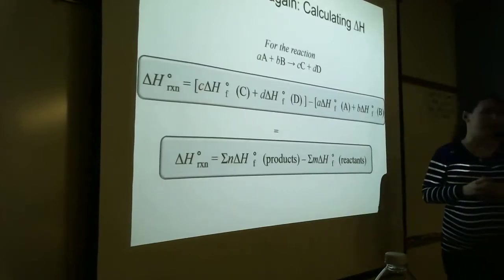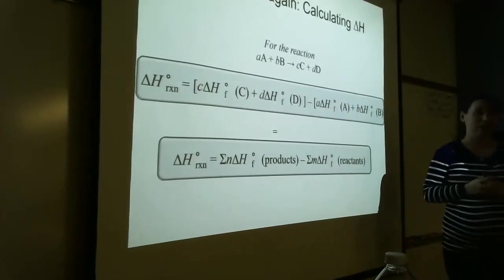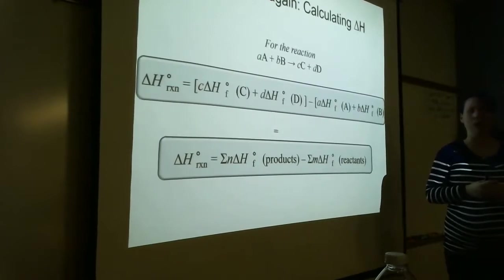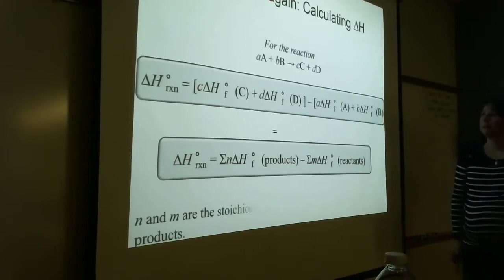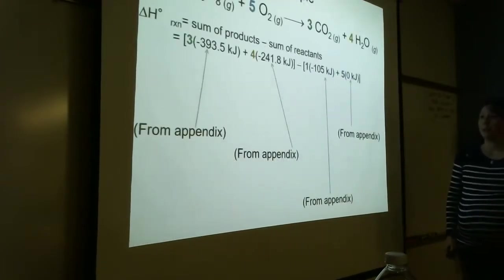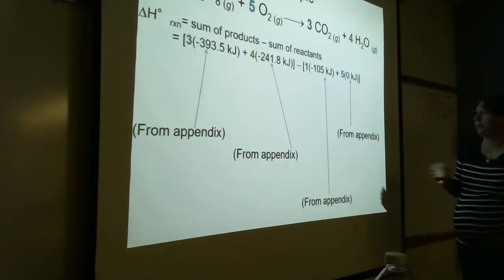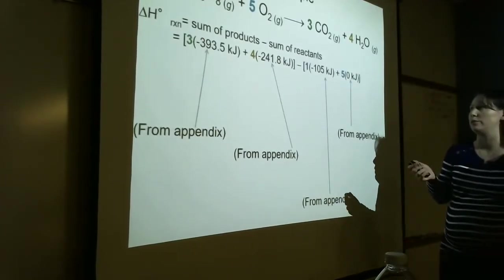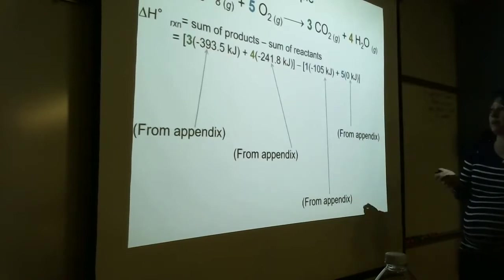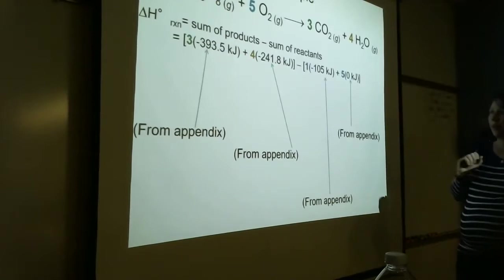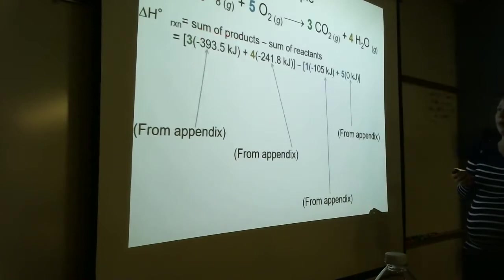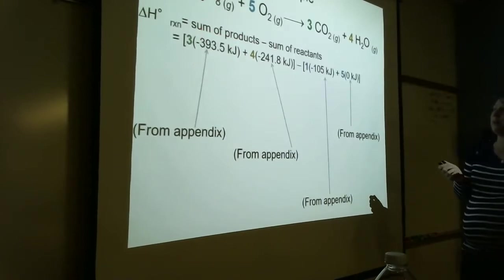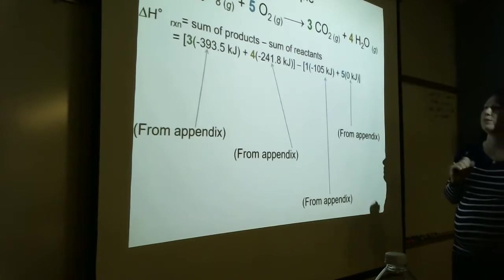So here's an example — all these values are coming from the appendix. If you're looking at this going, where did she get those numbers? Those are coming directly from the appendix. So if I've got this reaction and I say, what's delta H? It's the sum of the heats of formations of products times their coefficients, minus the sum of the heats of formations of the reactants times their coefficients.